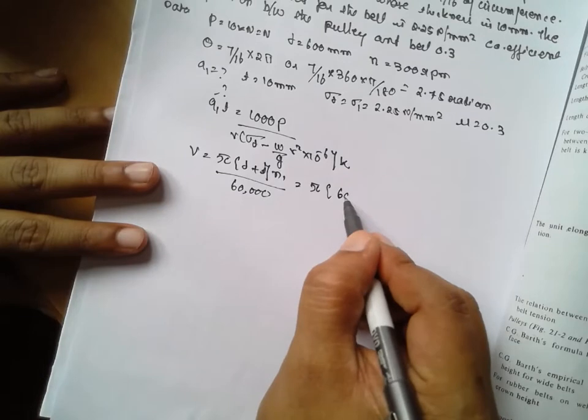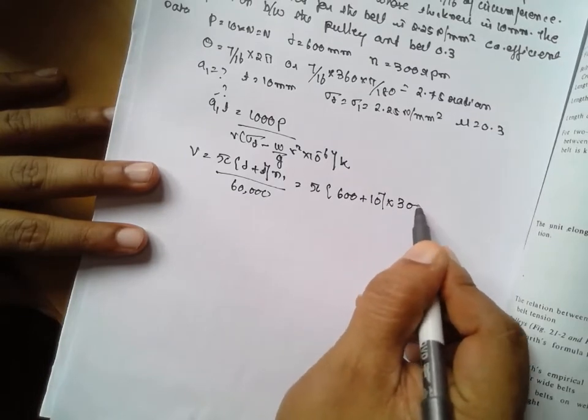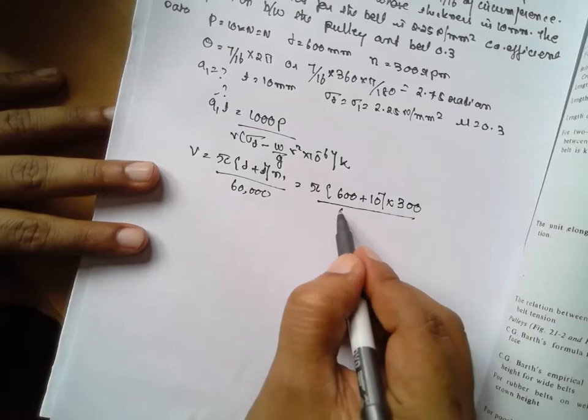Pi times diameter 600 plus t is 10 into n is 300 rpm divided by 60,000.